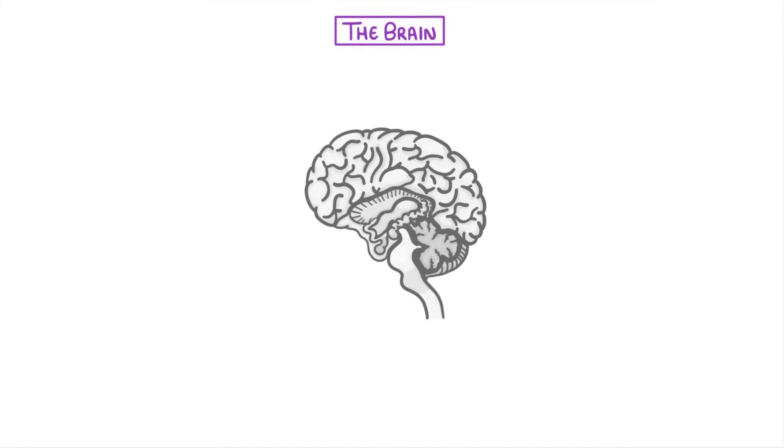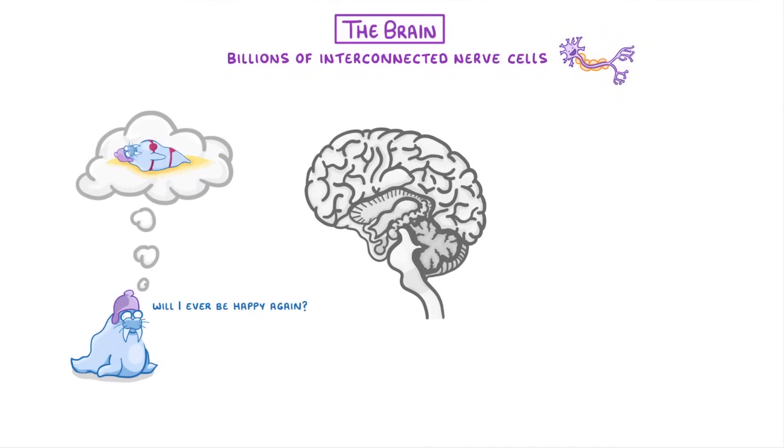Today's video is all about the brain, which is made up of billions of interconnected nerve cells and holds all of our thoughts and memories. It's also responsible for all of our complex behaviors, from choosing which clothes to wear, to running or reading.